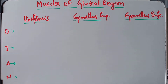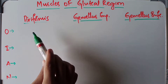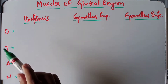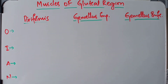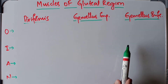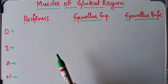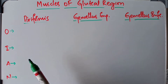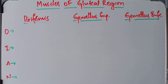Hey guys, welcome back. Today we are going to discuss Part 2 of the muscles of the gluteal region. We previously discussed the gluteus maximus, medius, and minimus in terms of origin, insertion, action, and nerve supply. Today we will discuss the piriformis, gemellus superior, gemellus inferior, quadratus femoris, obturator internus, and tensor fasciae latae. I am AM Sheikh and I teach anatomy videos in detail required for UG university examinations.